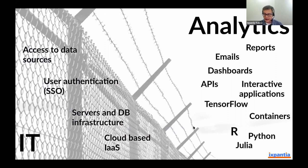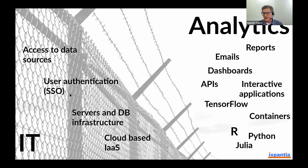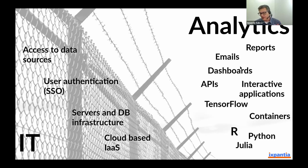Automation has usually been the domain of IT — they control access to data sources, user authentication, servers, database infrastructure, and cloud-based services. Suddenly we get a group of analysts — and sometimes not even formally analysts but domain knowledge holders — who have a good idea and know how to execute it. They're working on reports and in R Markdown, figured out how to send automated emails, make interactive dashboards, and start playing with containers in languages that aren't so common on the IT side, like R, Python, and Julia.